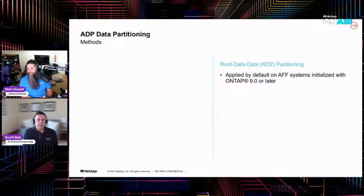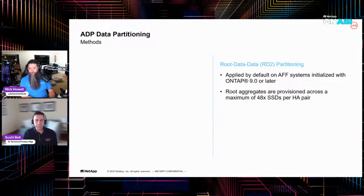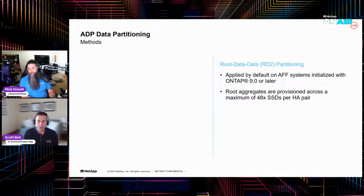Let's start with RD2 because that's what's used with SSDs. It is applied by default on all AFF systems initialized with ONTAP 9.0 or later. You'll notice I don't specifically call out ASA — ASA can't exist without AFF, so it will leverage that as well. Root aggregates are provisioned across a maximum of 48 SSDs per HA pair. That doesn't mean you can't exceed that; it's just when ONTAP is initializing the system, it stops at 48.